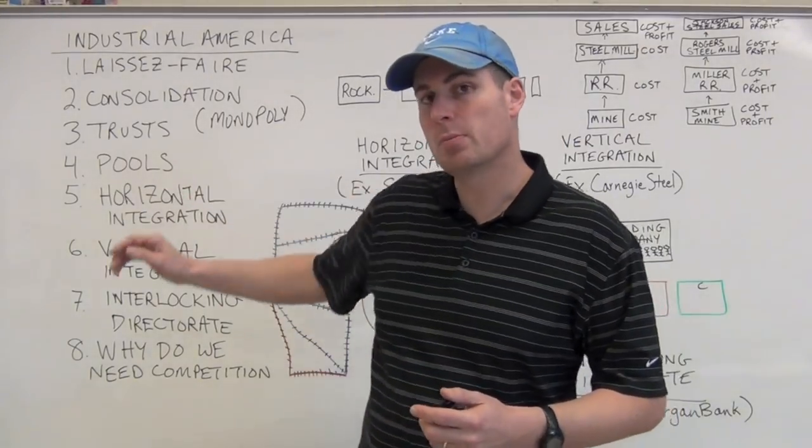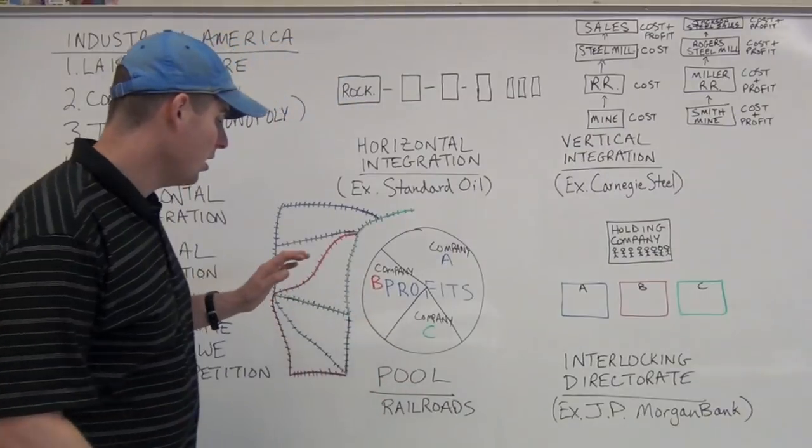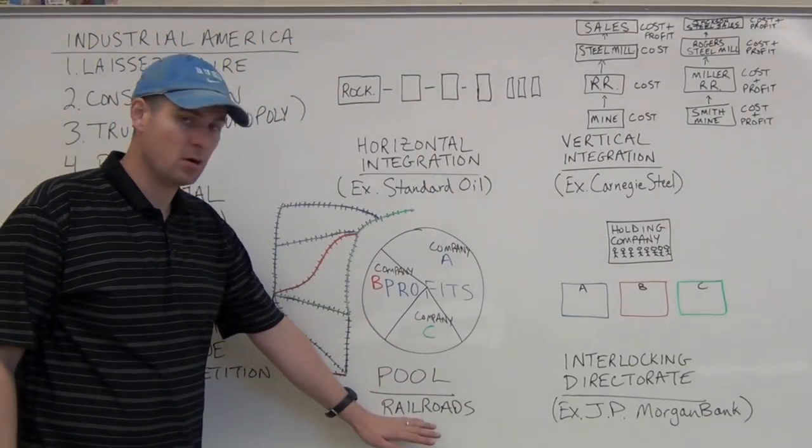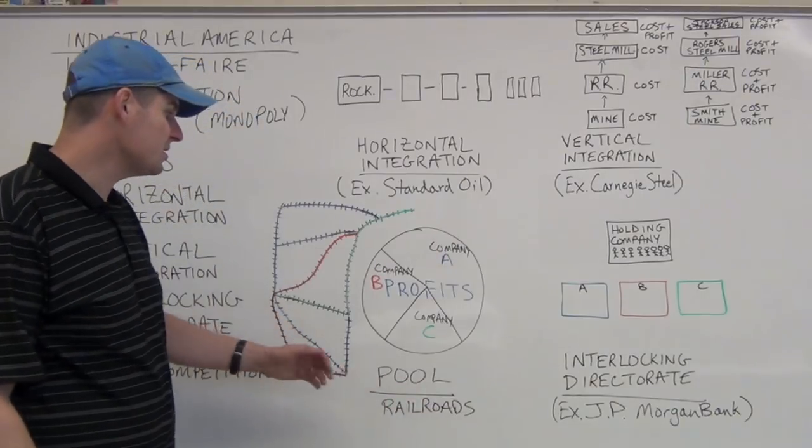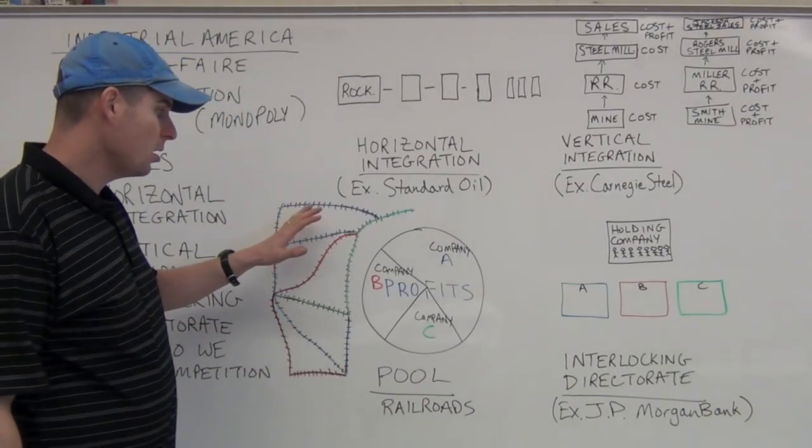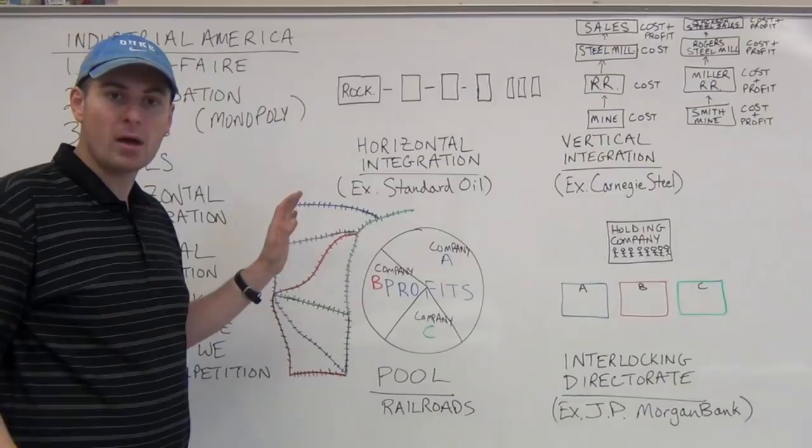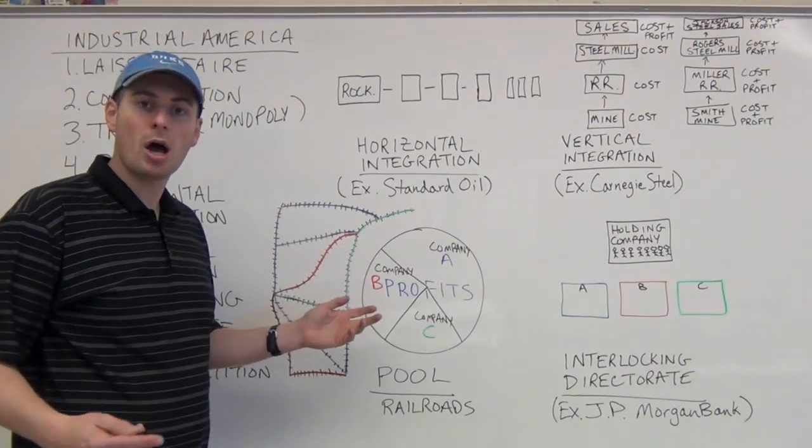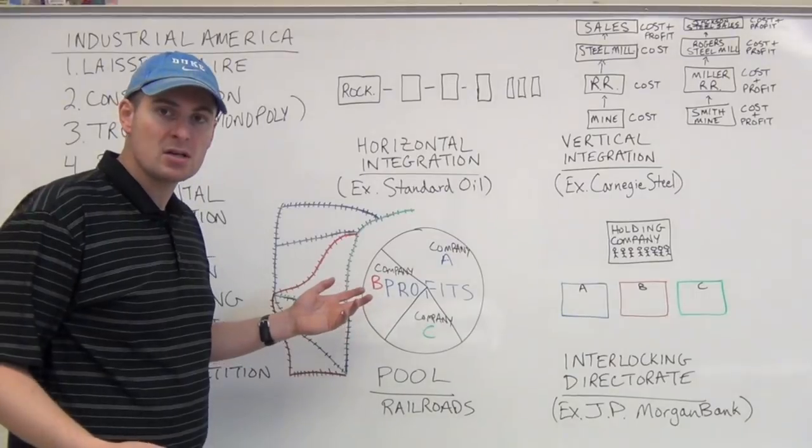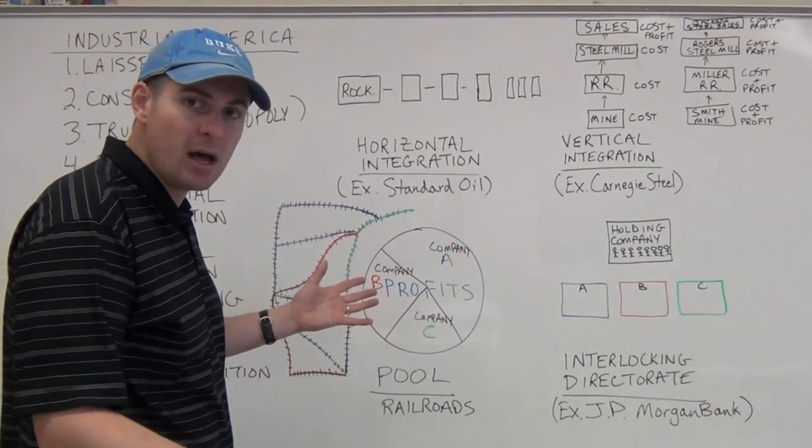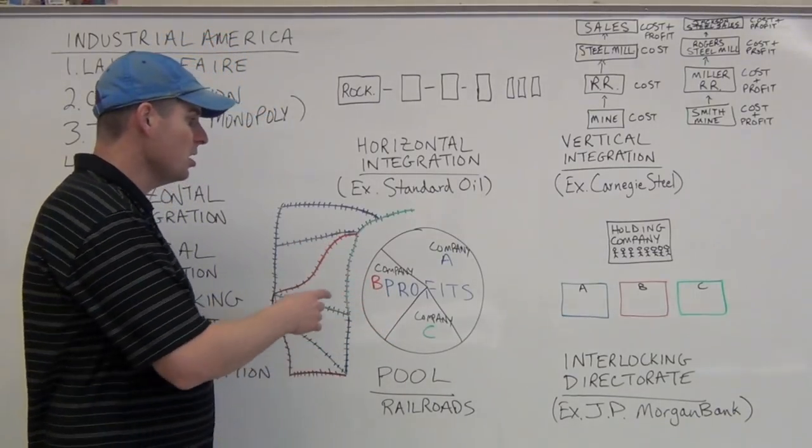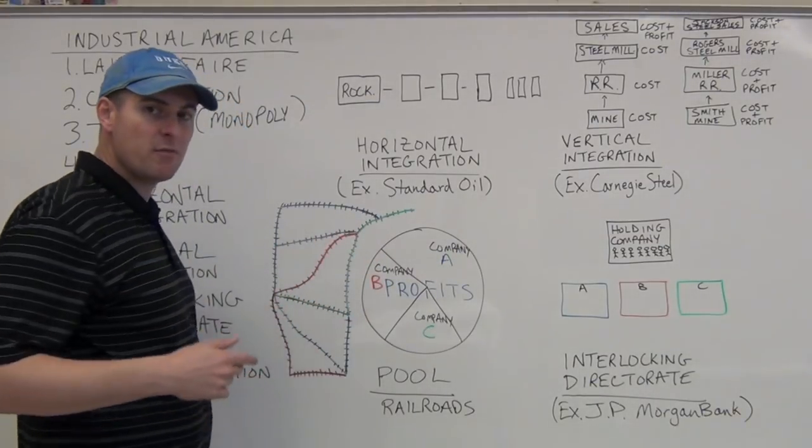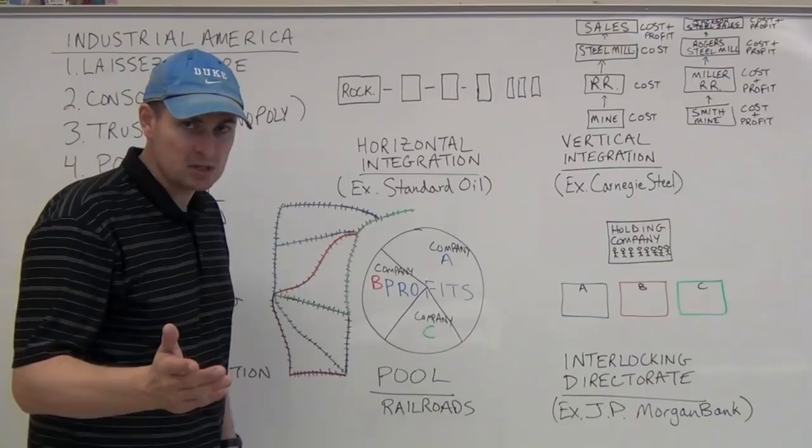The first thing we're going to look at is called the pool. The example we're using for the pool is the railroad. The railroad is essentially—you have many different railroad companies that would build and own and operate their own lines. This is not some big surprise.